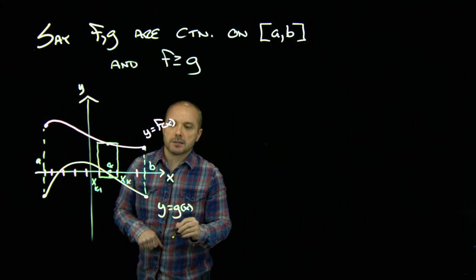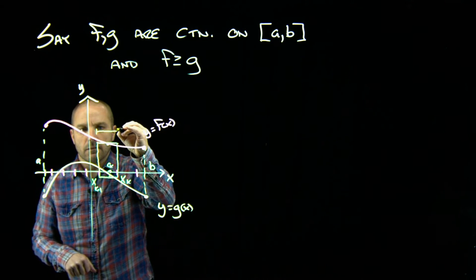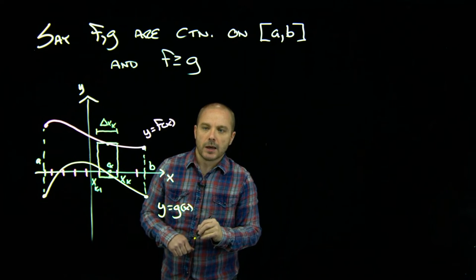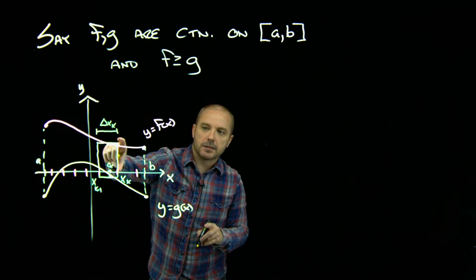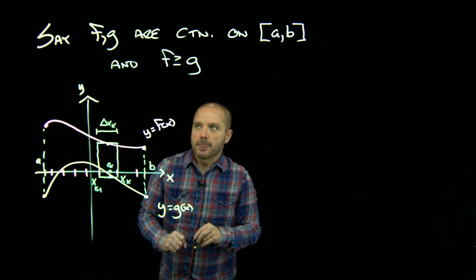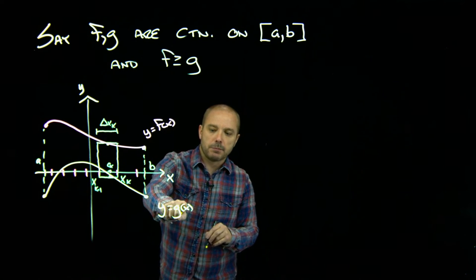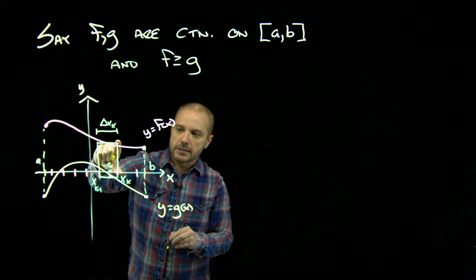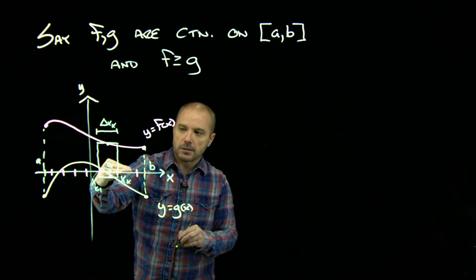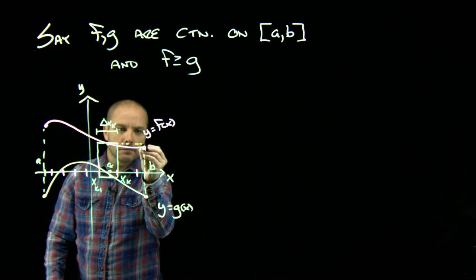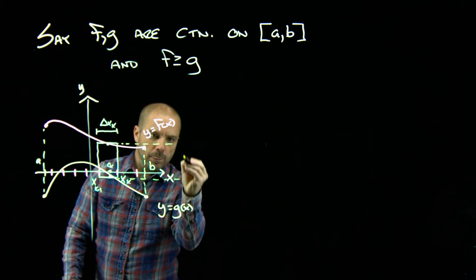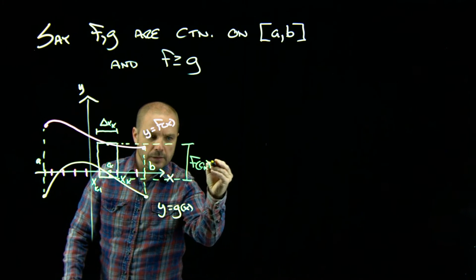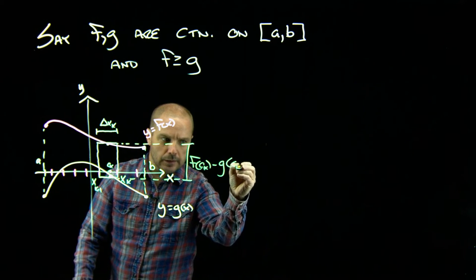And then we've got this approximating rectangle whose dimension here is delta x sub k and whose height is the difference in the two functions. Now this is where it's key that f always be bigger than or equal to g, because how we calculate this distance is larger minus smaller. So this distance is whatever f at c sub k is minus g at c sub k.